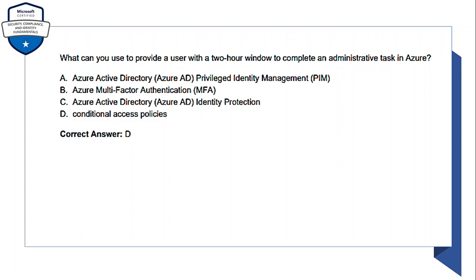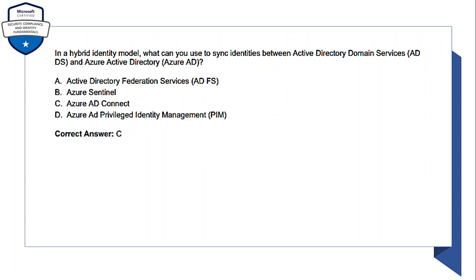'What can you use to provide a user with a two-hour window to complete an administrative task in Azure?' — The answer is Conditional Access Policies (option D). Conditional access policies provide a user with a two-hour window to complete an administrative task in Azure. 'In a hybrid identity model, what can you use to sync identities between Active Directory Domain Services (AD DS) and Azure Active Directory (Azure AD)?' — The options are AD FS, Azure Central, Azure AD Connect, and Azure AD Privileged Identity Management (PIM). The correct answer is Azure AD Connect.